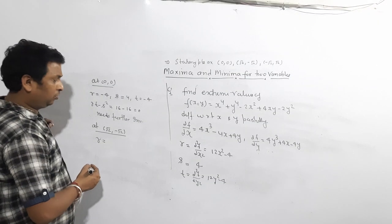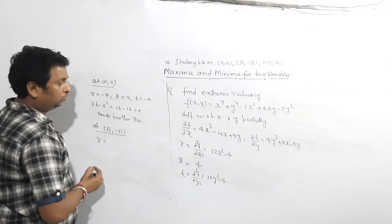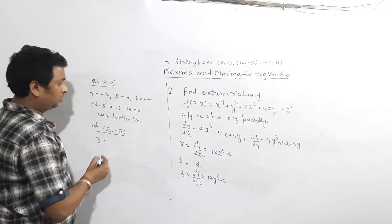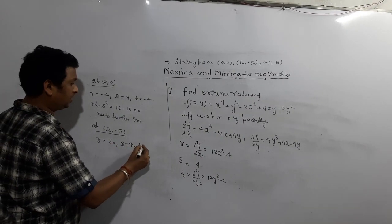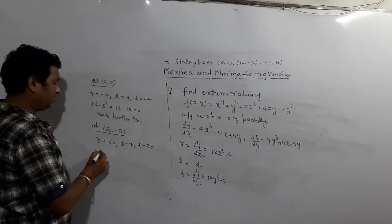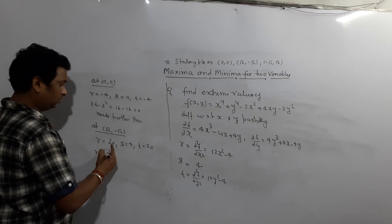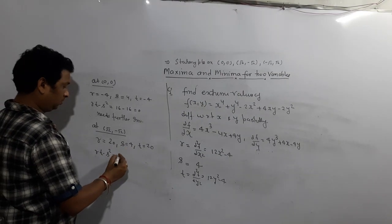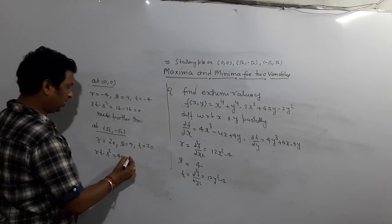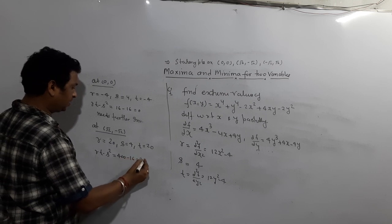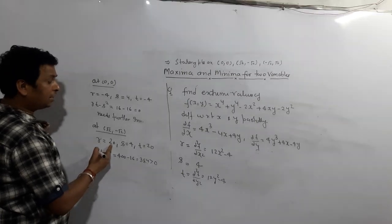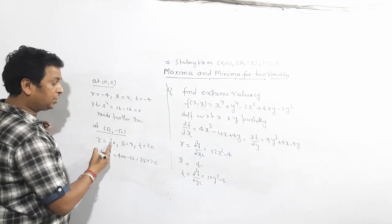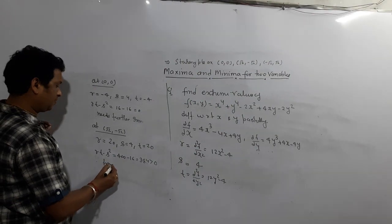Now calculate R, S, T. R = ∂²f/∂x² = 12x² − 4. S = ∂²f/∂x∂y = 4. T = ∂²f/∂y² = 12y² − 4. Now we evaluate at each stationary point.